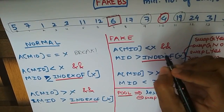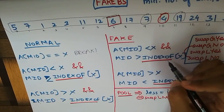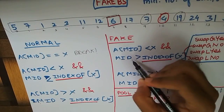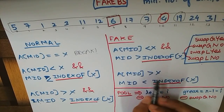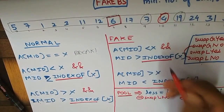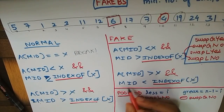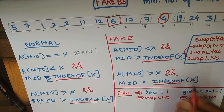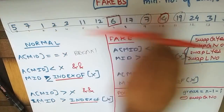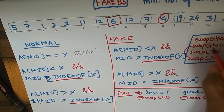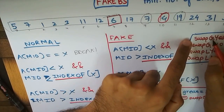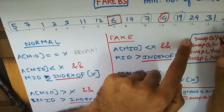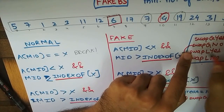The fake binary search cases are where swaps are needed: a[mid] < x but index_of(x) is actually less than mid — meaning binary search goes the wrong way; and a[mid] > x but mid is actually less than index_of(x). In these cases I need to tweak the logic so it proceeds in the right direction, and I keep track of swap_greater and swap_less accordingly. swap_greater counts elements needing replacement with something greater than x; swap_less counts replacements with something less than x.